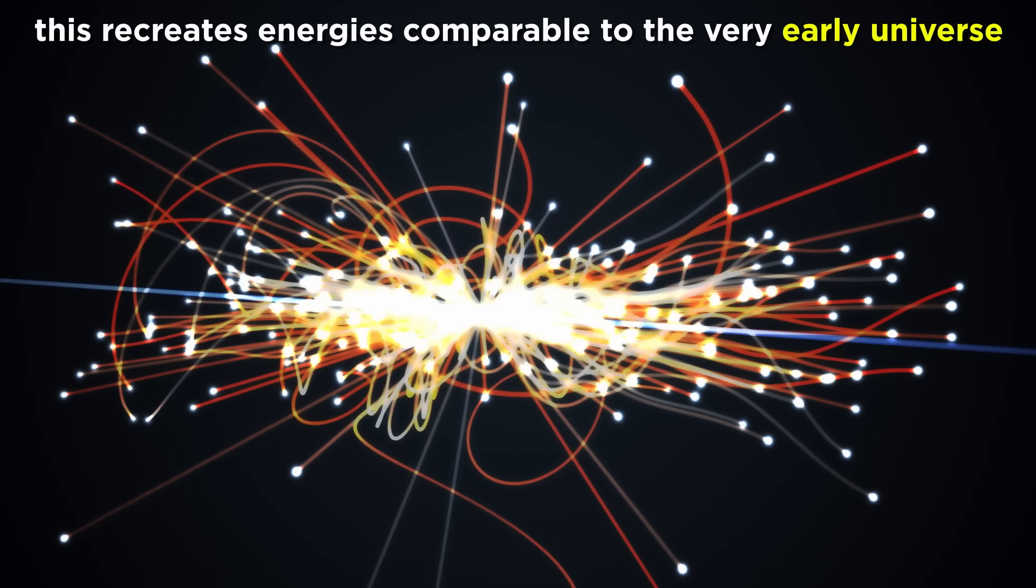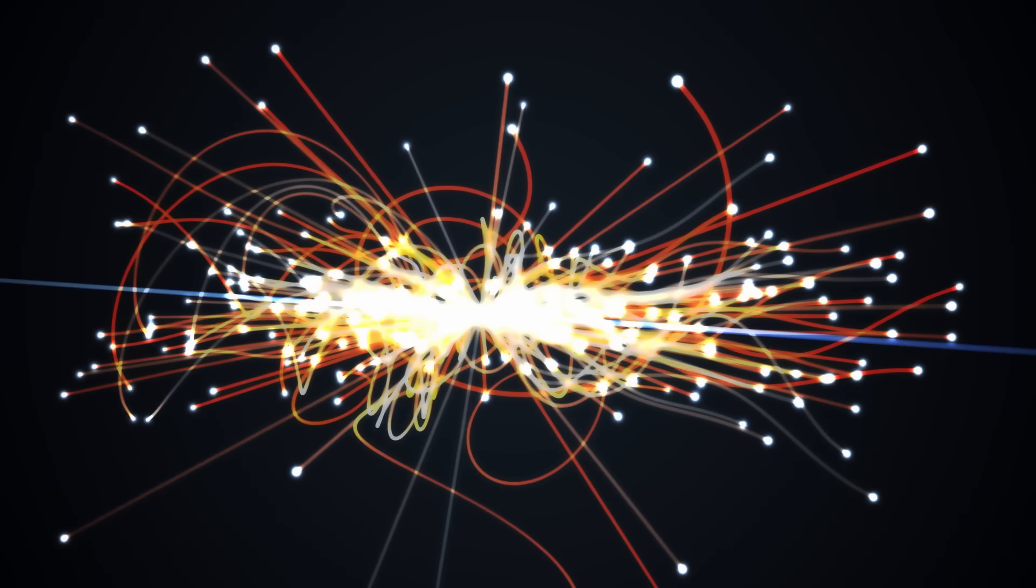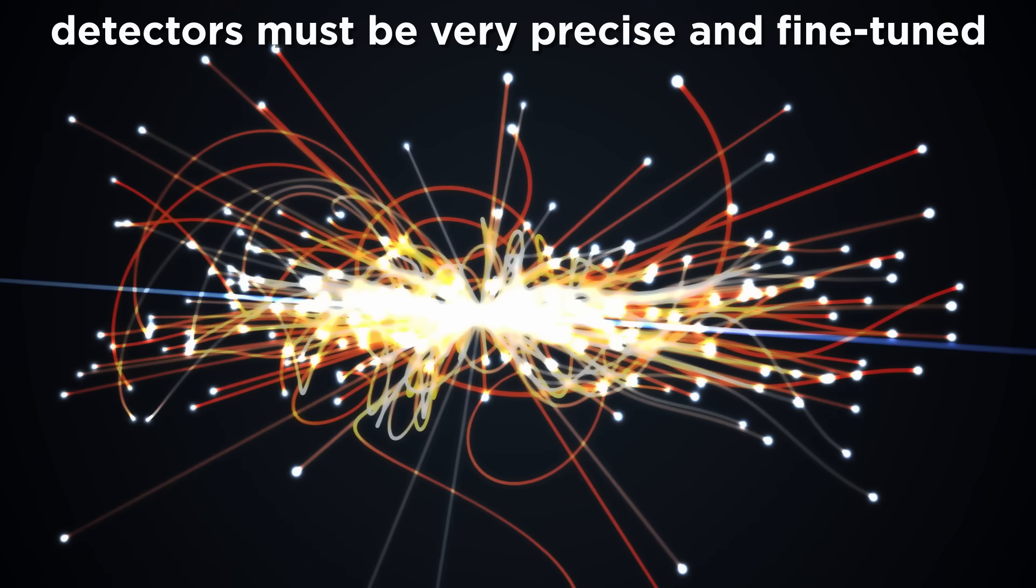Because the energy scale of colliders reaches far beyond what we normally see in the universe today, these experiments can recreate the conditions of the hot and dense early universe, or in some of the most extreme parts of our universe today. This allows for a different angle of studying particles than just observing the ones present around us at this time. However, these conditions only exist for a tiny fraction of a second, so detectors must be phenomenally precise and fine-tuned.